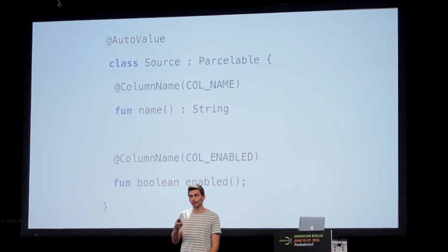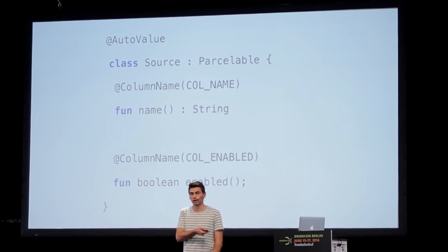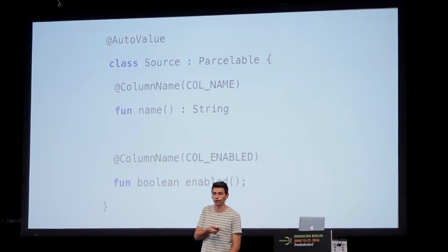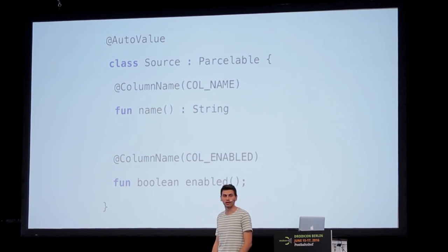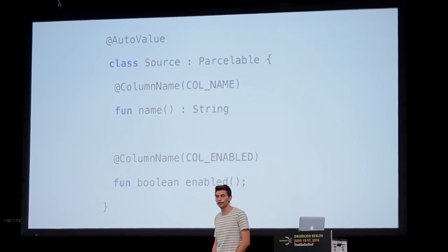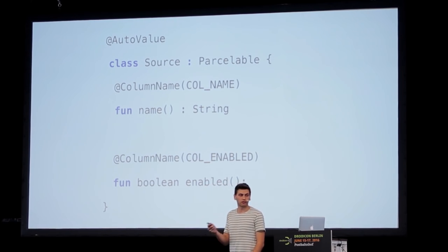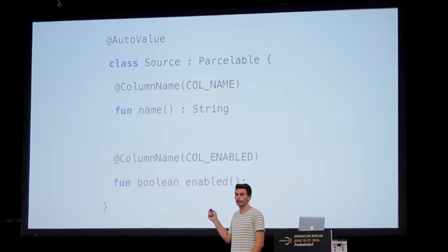We talked about immutability before — we want our objects to be immutable. So even in Kotlin I use AutoValue and not Kotlin's data class. We annotate the fields with the column name — the column name and column_enabled are basically static final string fields with the constant.